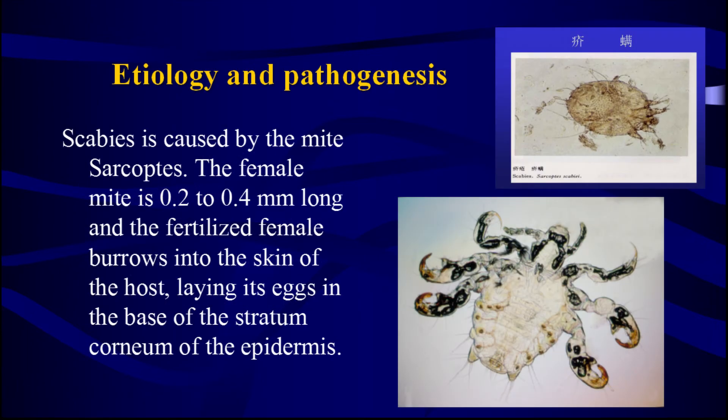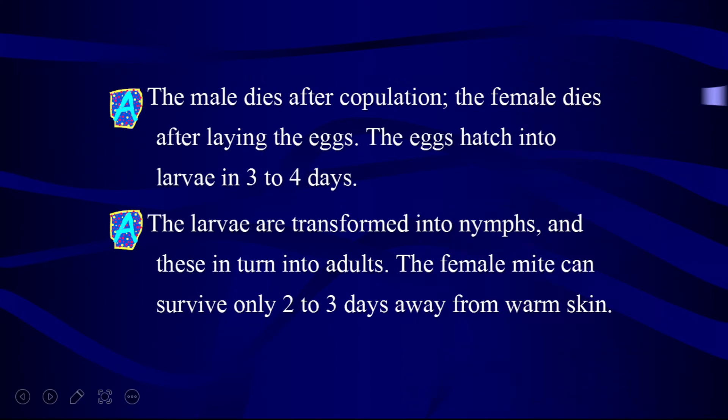Etiology and pathogenesis. Scabies is caused by the mite Sarcoptes. The female mite is 0.2 to 0.4 millimeters long, and the fertilized female burrows into the skin of the host, laying its eggs in the base of the stratum corneum of the epidermis. The male dies after copulation. The female dies after laying the eggs.